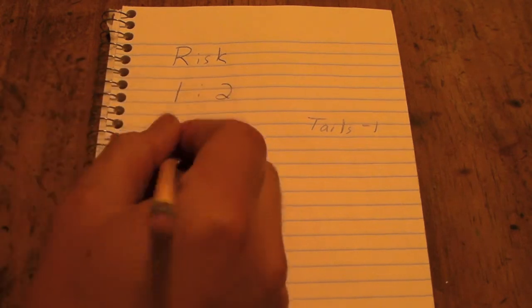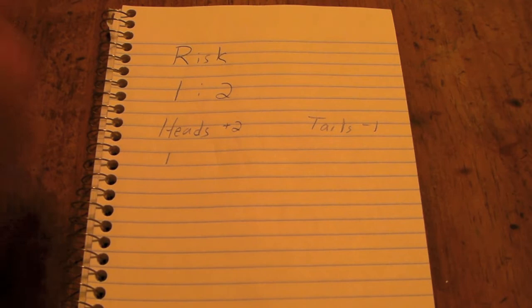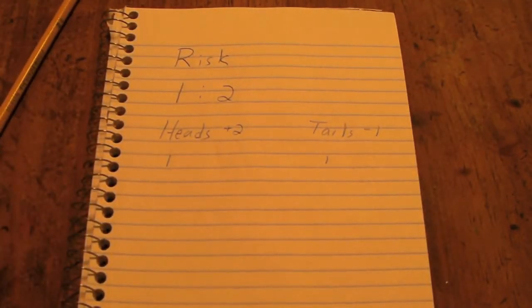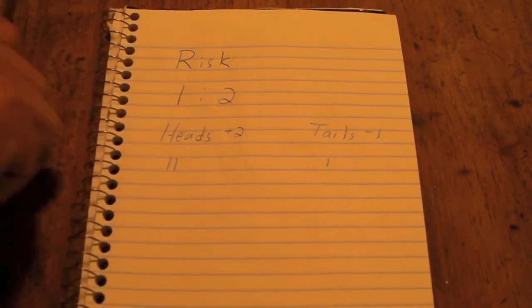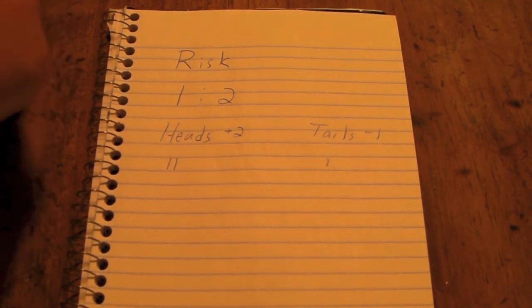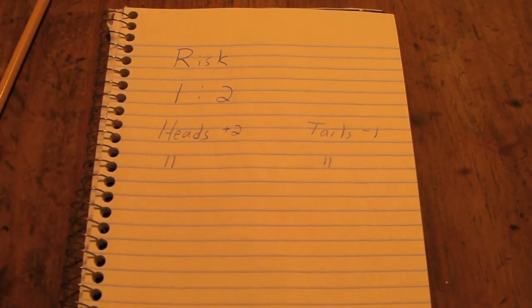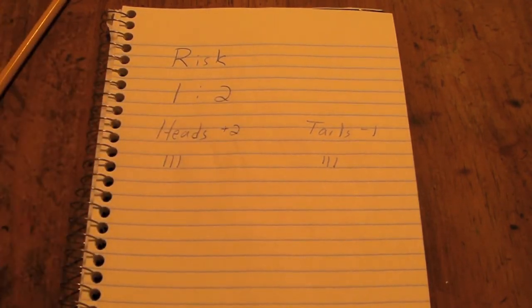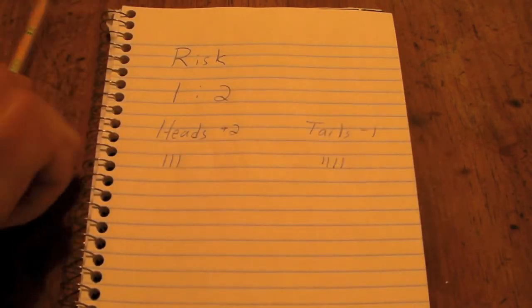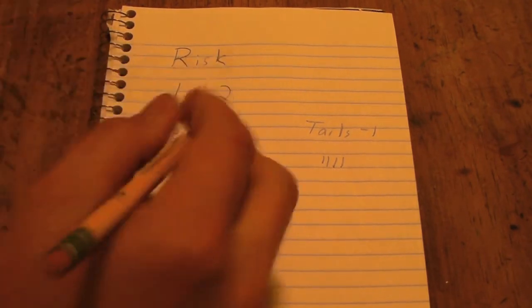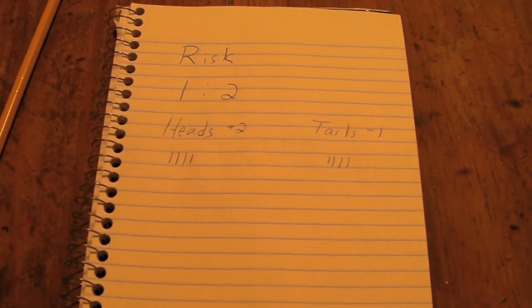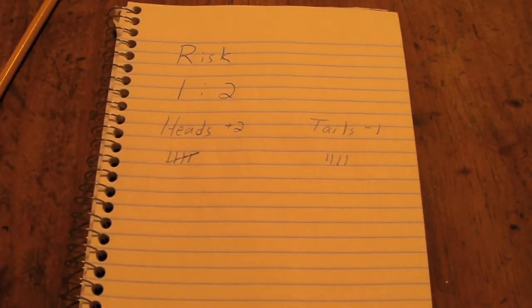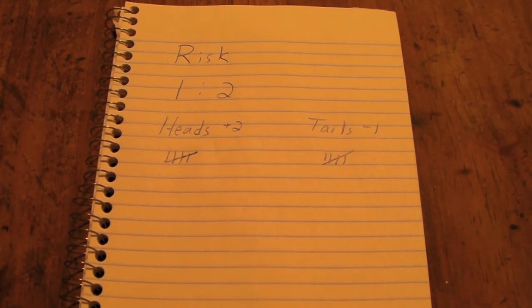Heads. Dropping a little. Tails. Tails. Heads. Tails. Tails. Heads. Heads. Seven flips. Got three more to go. Heads. Heads. Tails. Keep them.